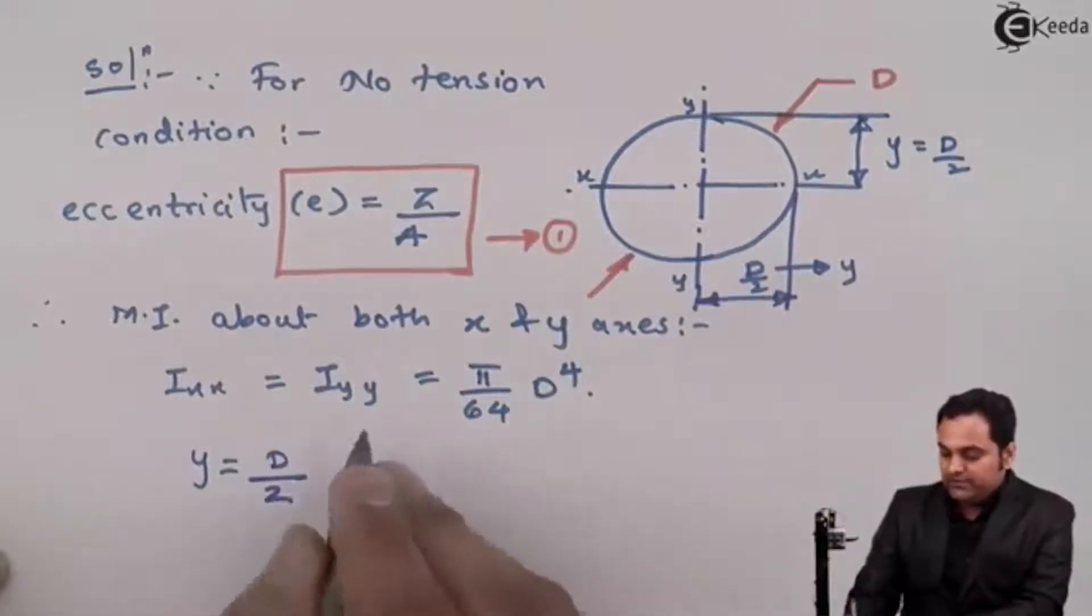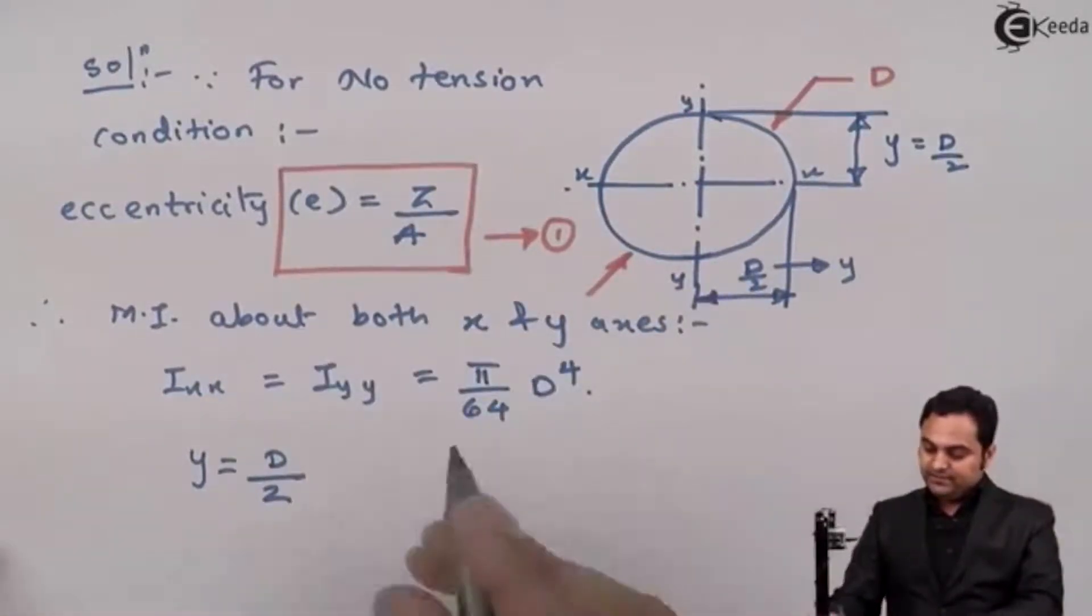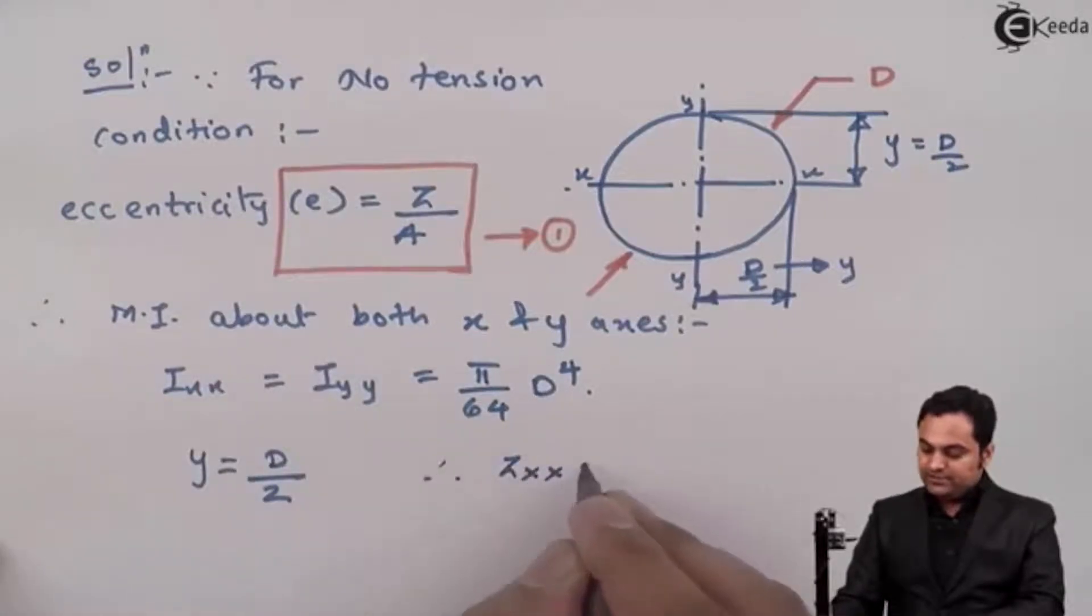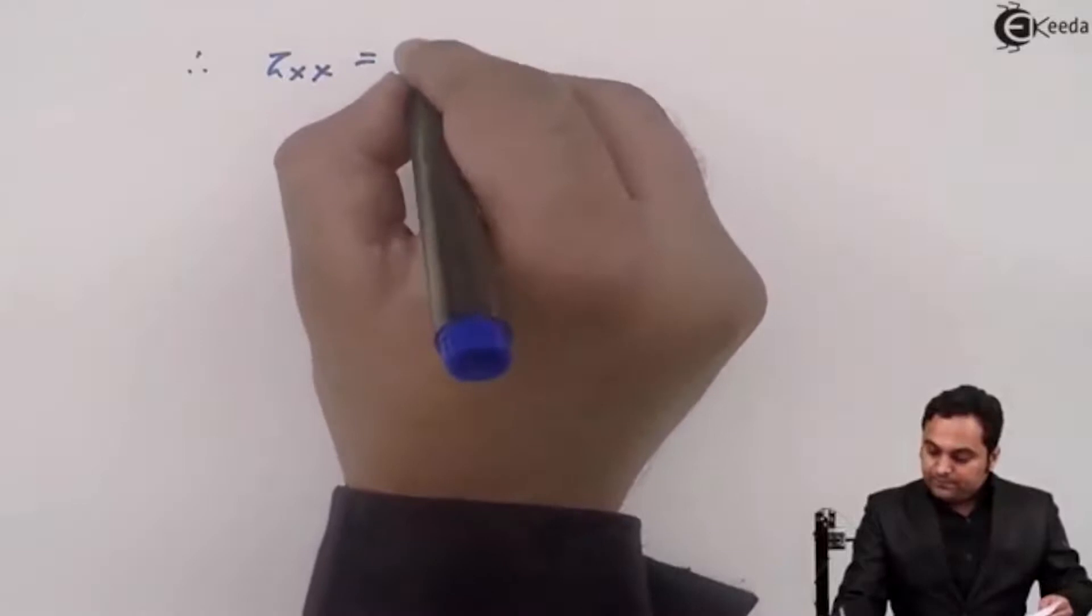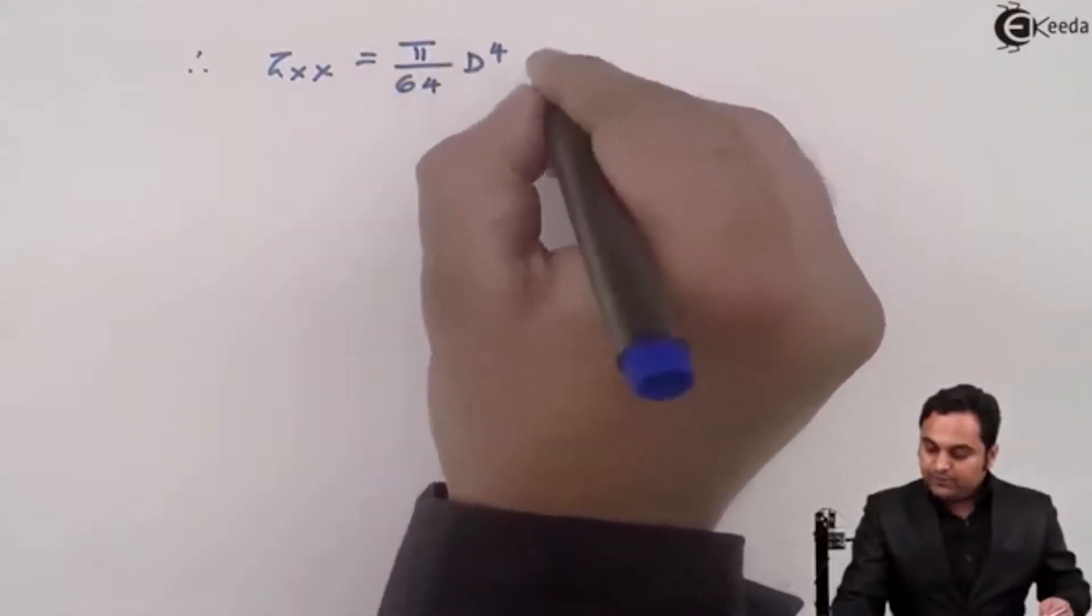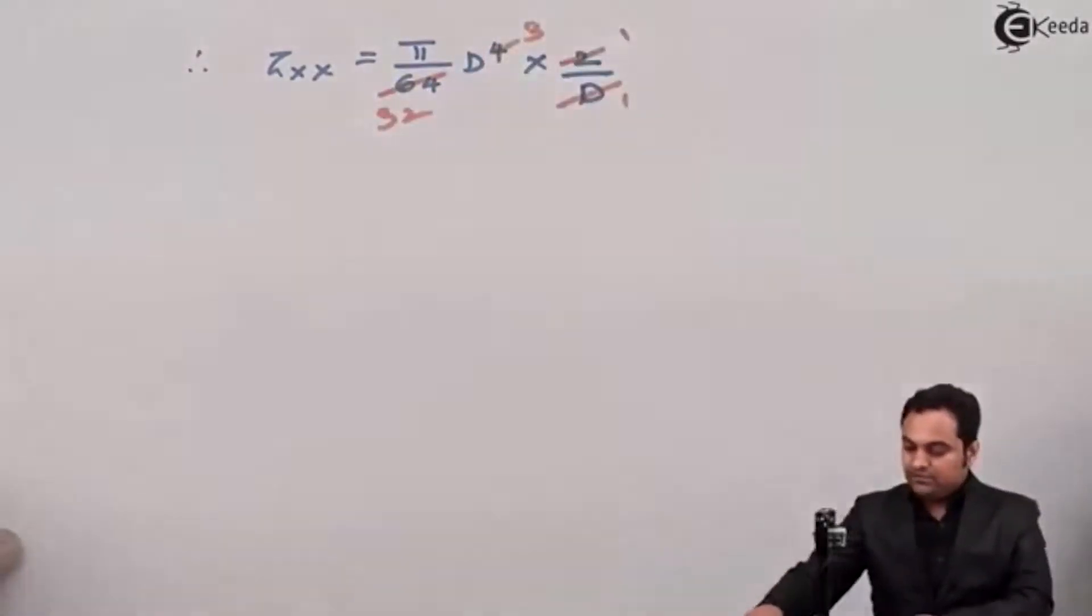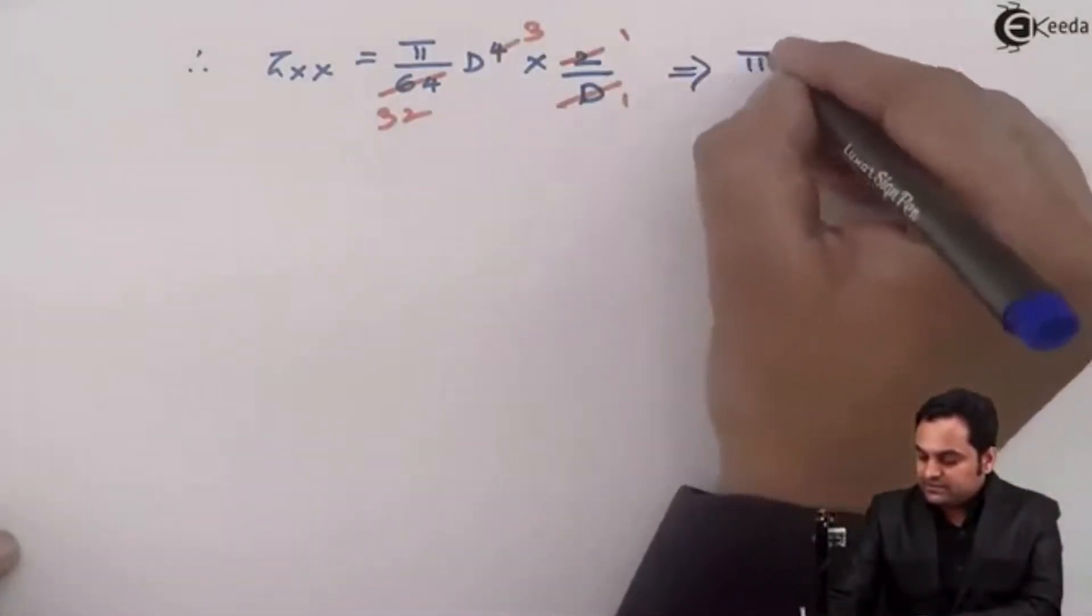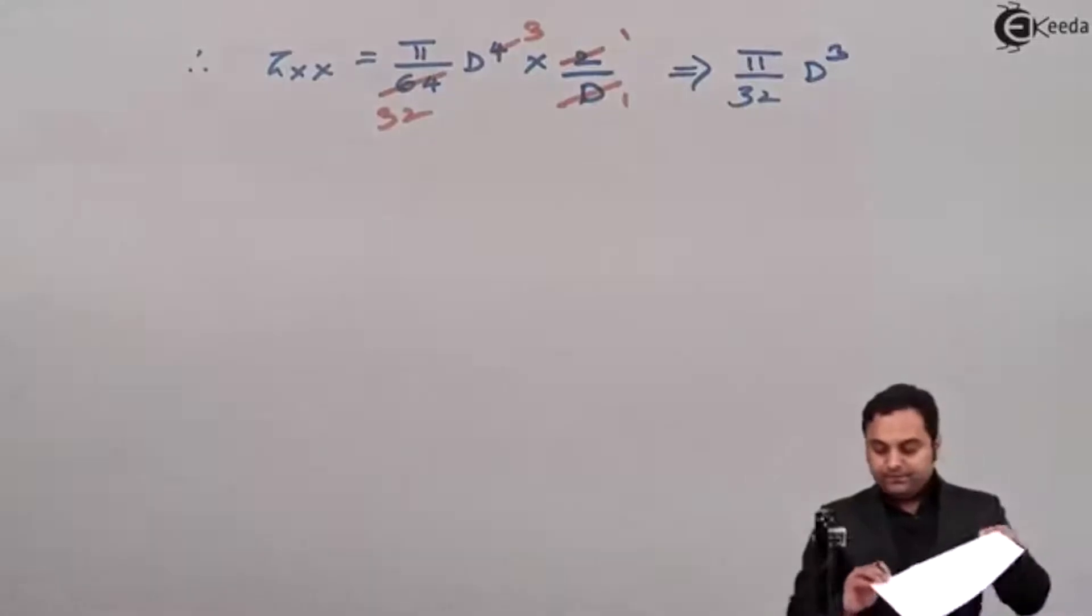So here I'll put the values one by one, that is putting first ZXX. Therefore ZXX is the section modulus about X axis, so it is IXX upon Y. IXX π by 64 D raise to 4, Y it is D by 2. So therefore this will become π by 64 D raise to 4 multiplied by 2 by D. After the cancellation here we have ZXX as π by 32 D cube.